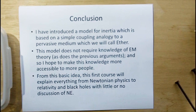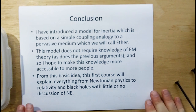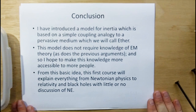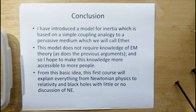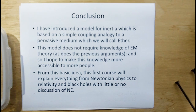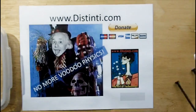Normal matter is virtually non-existent, and because it's virtually non-existent, the wakes and disturbances of the ether as particles move through do not reach out and touch their neighbors. Therefore the aspect of an object moving through the ether is of no relevance. I've introduced a model for inertia based on a simple coupling analogy to a pervasive medium, which we're going to call the ether. This model does not require knowledge of EM theory as do the previous arguments, and I hope to make this knowledge more accessible to more people. From this basic idea, in this first course we will explain everything from Newtonian physics to relativity and black holes with little or no discussion of new electromagnetism. Thank you very much.